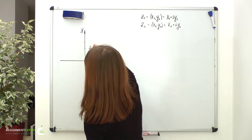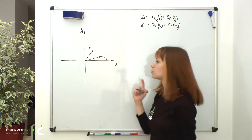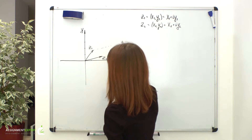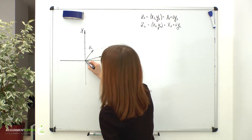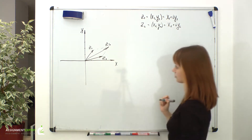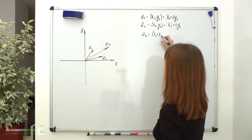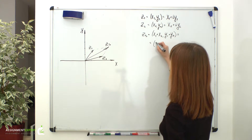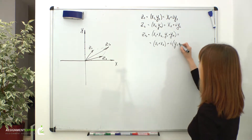Let's draw these radius vectors on our plane. Suppose here we have z1 and here we have z2. Using the parallelogram rule we can add these two vectors — we form a parallelogram, and its diagonal will be the sum of these two vectors. Let's name it z3, which will have coordinates (x1 plus x2, y1 plus y2), or in algebraic form (x1 plus x2) plus i(y1 plus y2).